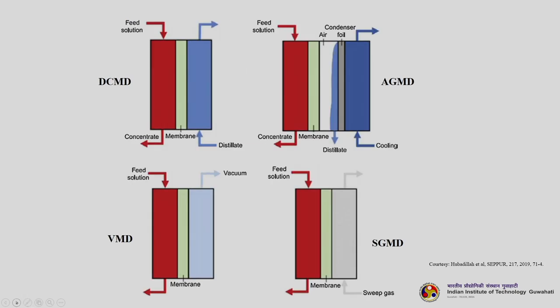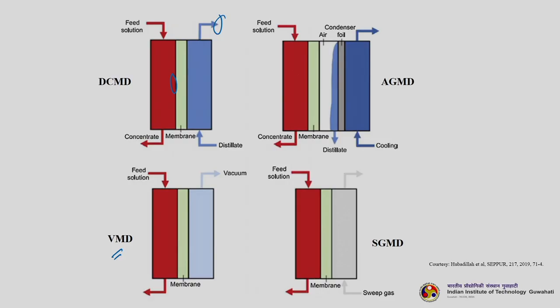In DCMD, the feed solution is in direct contact with the membrane; a distillate passes on the other side and the permeate is collected. In VMD — vacuum membrane distillation — similar to pervaporation, a vacuum is applied on the permeate side to maintain low vapor pressure, so you are trying to maintain as low a partial pressure as possible on the downstream side.